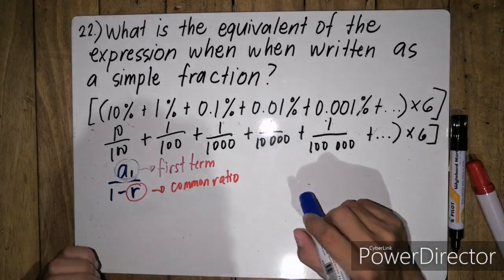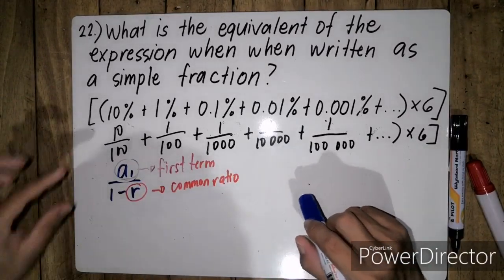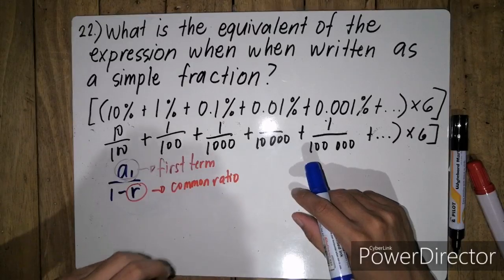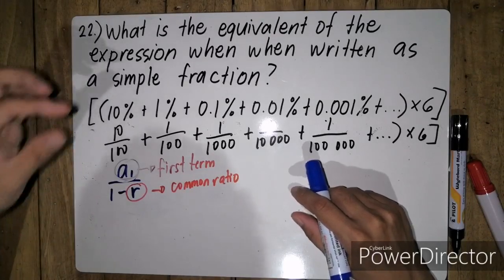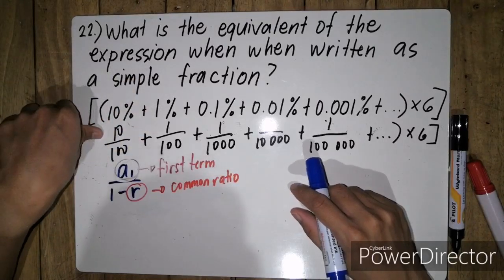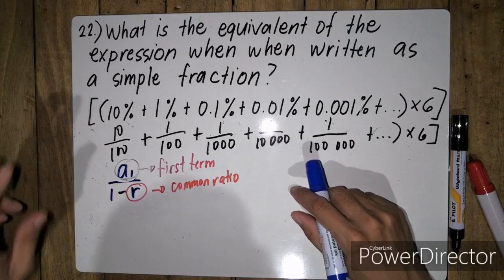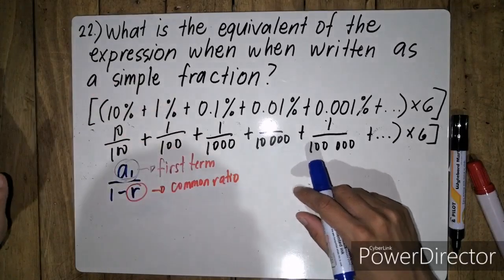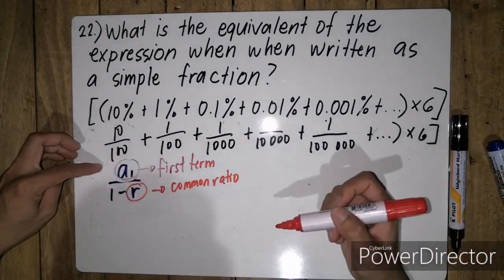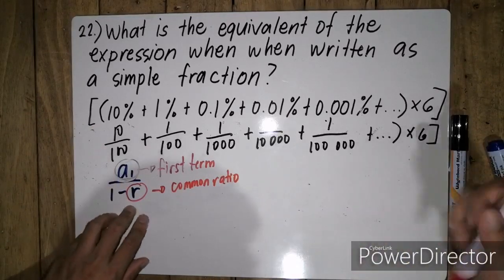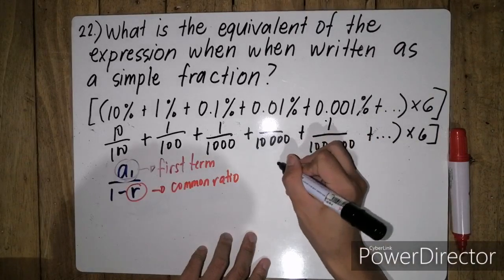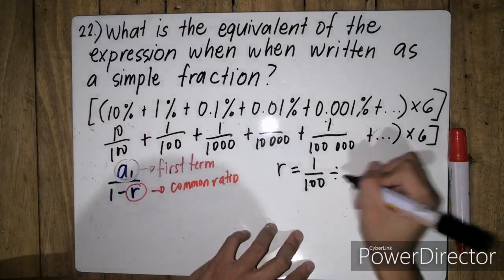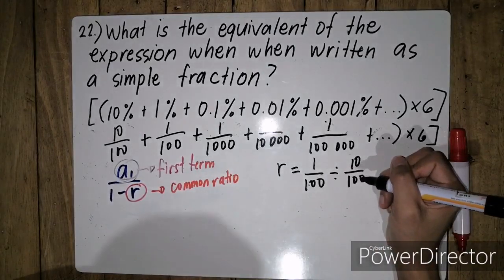Yung first term na tinutukin sa problem na ito, eto lang yung unang-unang number ng sequence — that is 10 over 100. Yung common ratio naman natin ay yung quotient when we divide the succeeding term by the previous term. Usually sinosolve siya gamit yung dalawang magkasunod na term — i-divide mo yung kasunod dun sa nauna. So alam natin na ang first term natin ay 10 over 100, and what we need to do is to find our r or common ratio. So r is equal to 1 over 100 divided by 10 over 100.